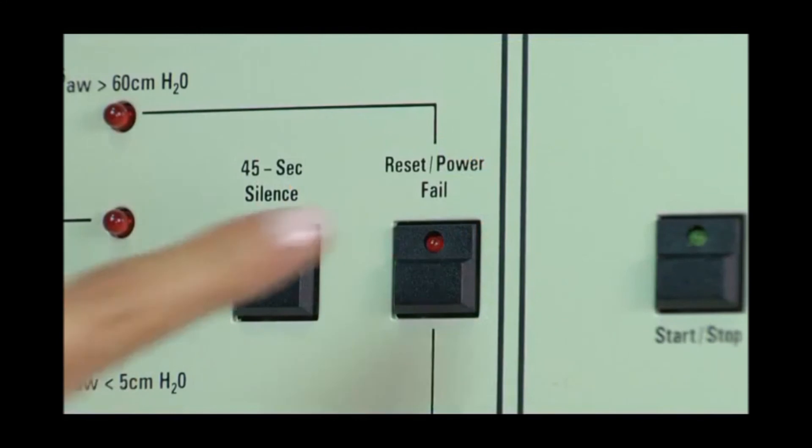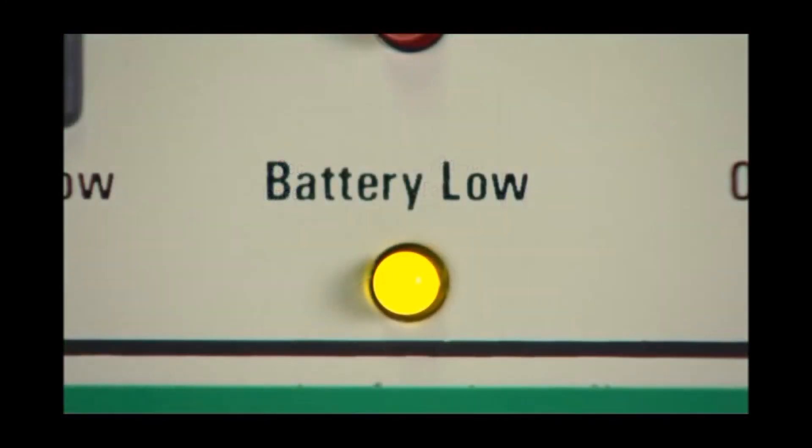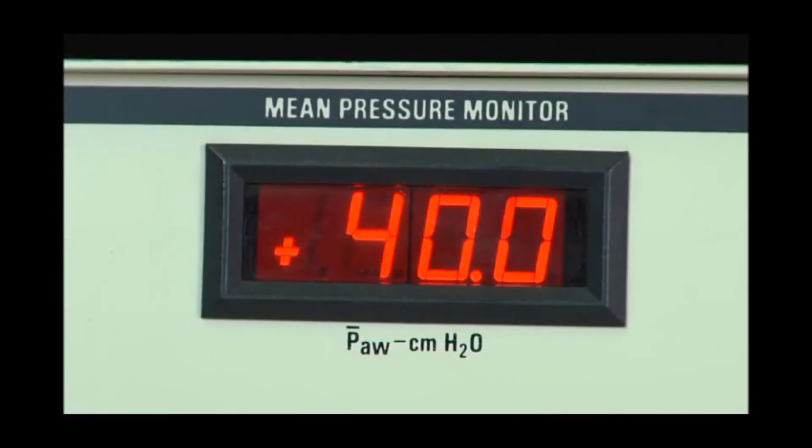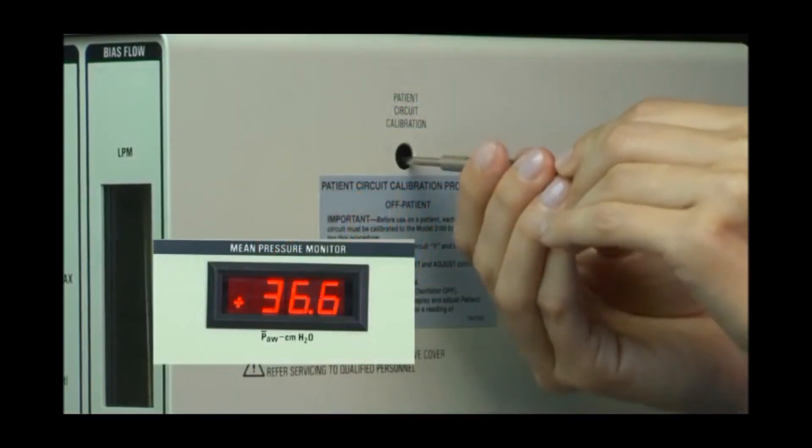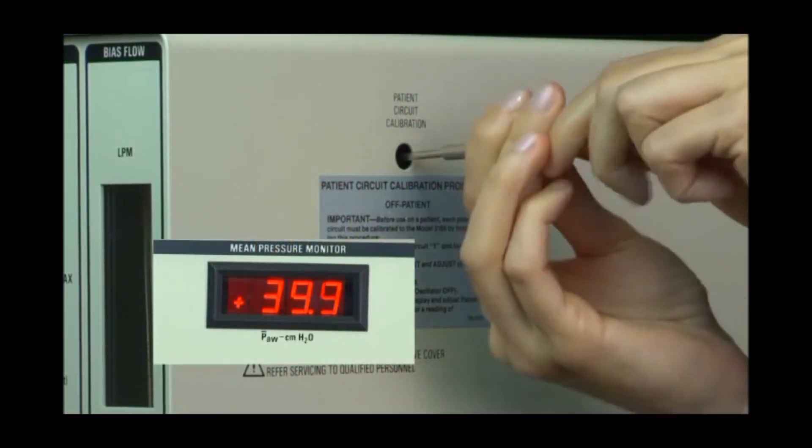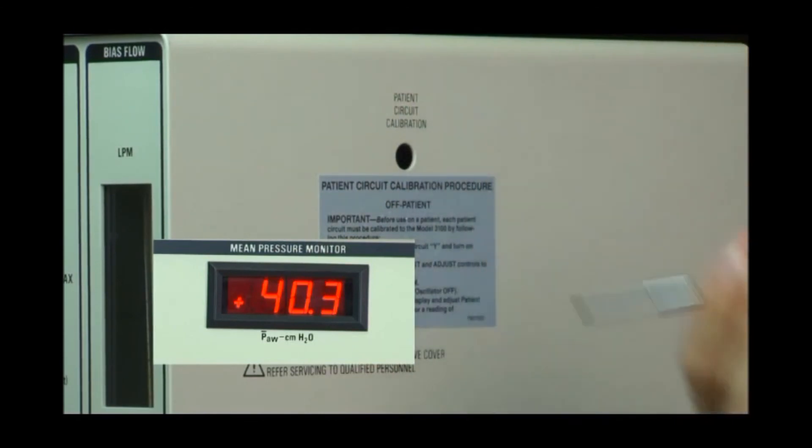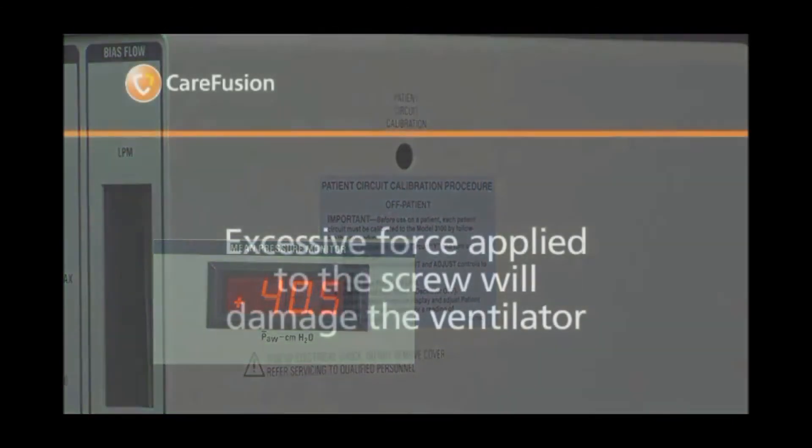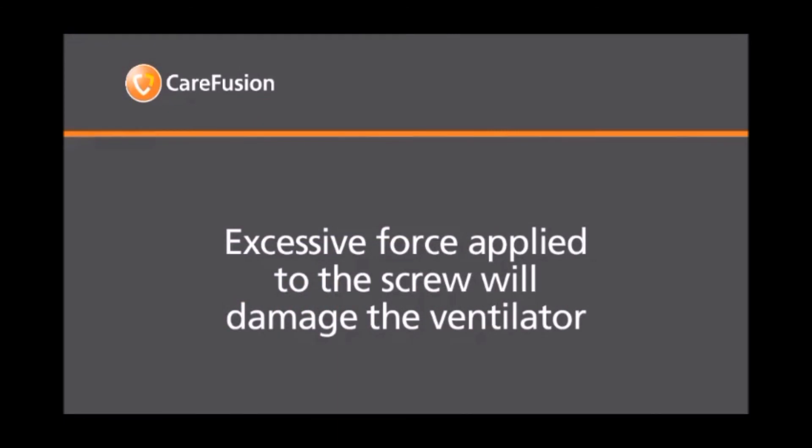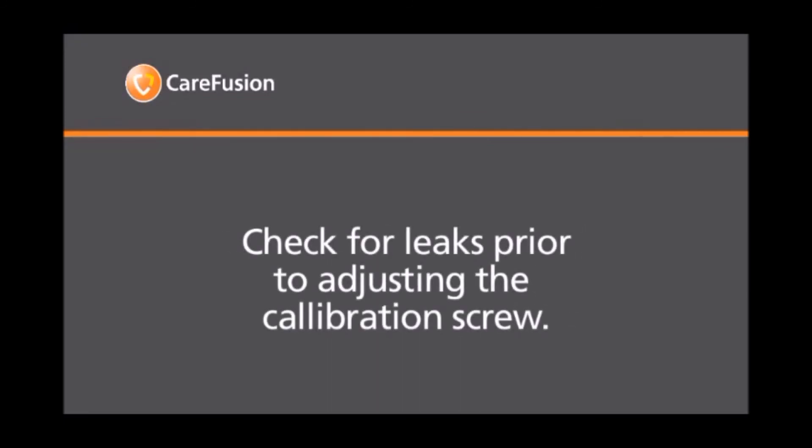It's normal for the battery low LED to illuminate when the reset button is pressed. The mean airway pressure should read 39 to 43 centimeters of water pressure. If necessary, adjust the patient circuit calibration screw shown here to achieve a mean airway pressure of 39 to 43 centimeters of water pressure. Caution should be used when performing this procedure since excessive force applied to the screw will damage the ventilator. If this pressure range cannot be achieved, remove any humidifier and check the circuit for leaks or damage.